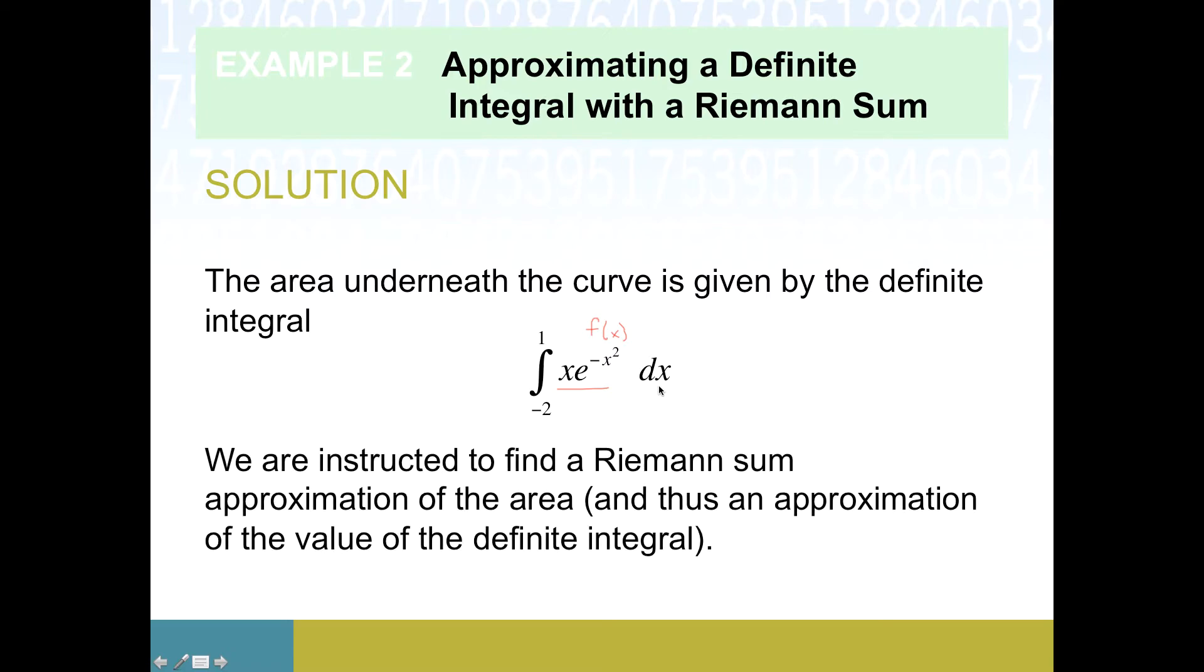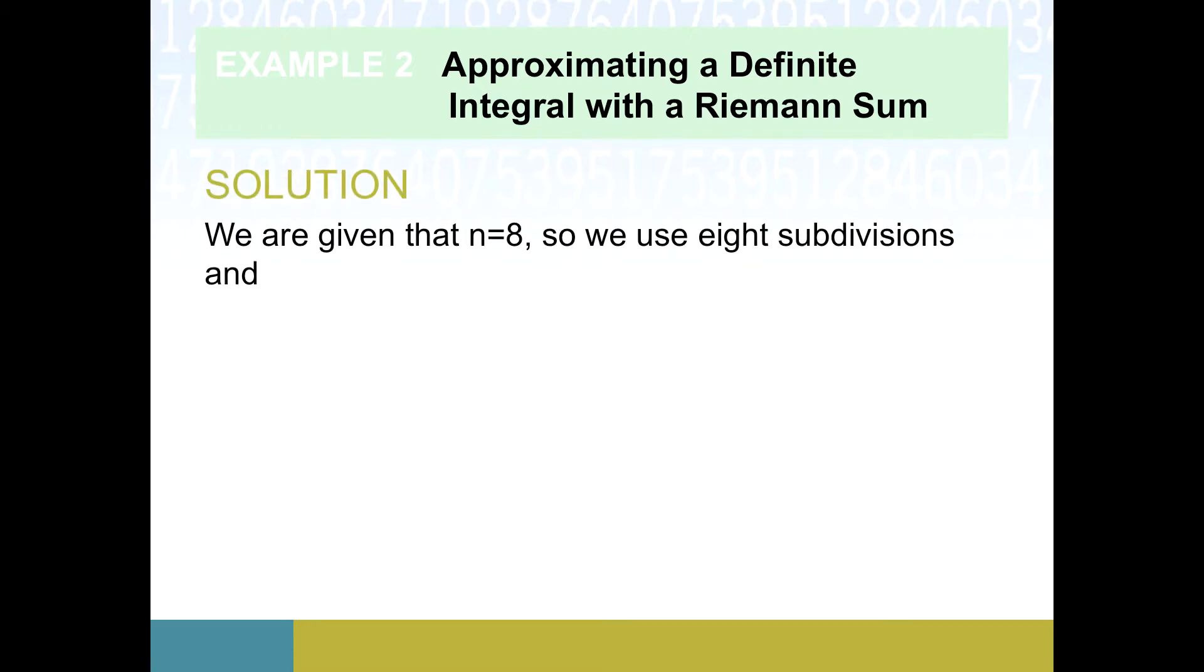We need to find a Riemann sum to approximate the area, and since the area is the definite integral, it's an approximate value of this definite integral too. We've got n equals eight, so we can use that handy formula for delta x. The top of our interval was one, the bottom was negative two—careful about subtracting negatives—that gives us delta x equals three eighths. Each rectangle has a width of three eighths of a unit.